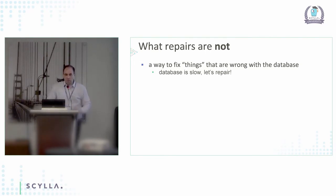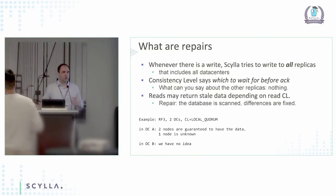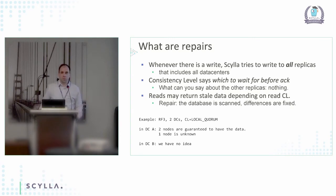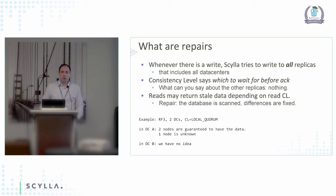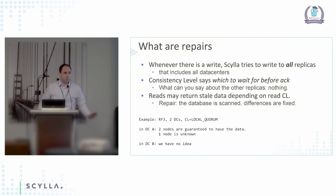So what exactly are repairs? Every time there is a write — this is the model discussed in data modeling and basic architecture classes — every replica for that key receives that write. When you write with consistency level one, that does not mean we are only writing to one replica. We are always writing to every replica. If you have replication factor three in one data center and three in another, we write to all six replicas for that key, always.